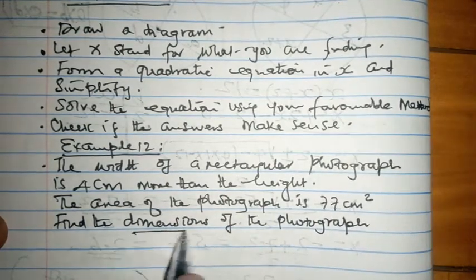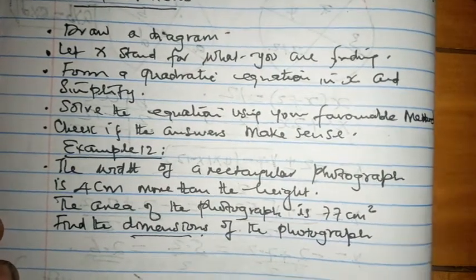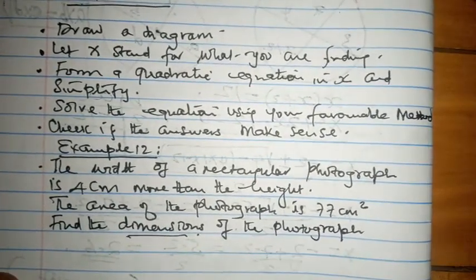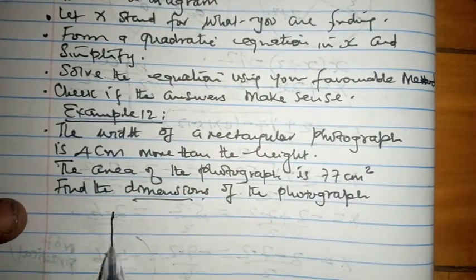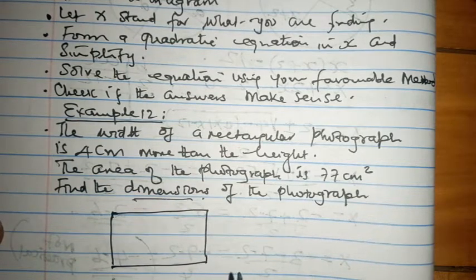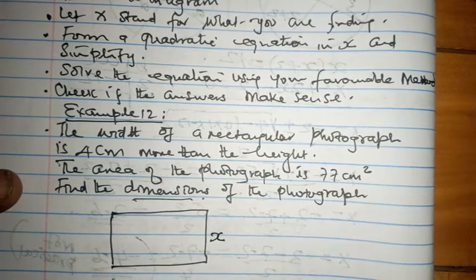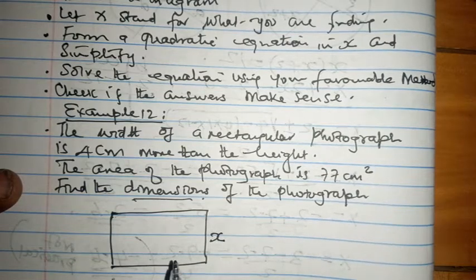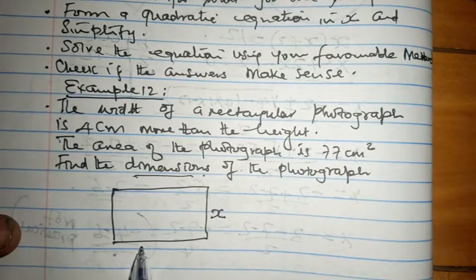The question is talking about the height, but I've talked about dimensions so that we are going to look for both height and width. Point number one, draw a diagram. We have something rectangular here. We are told that the width is four centimeters more than the height. So if this is the height, let the height be x.